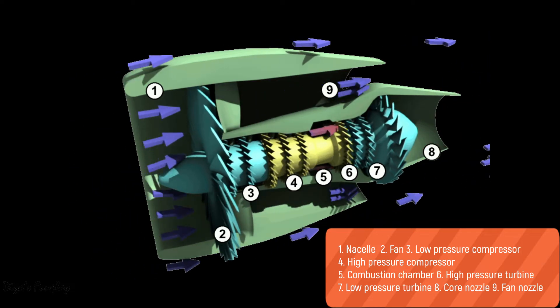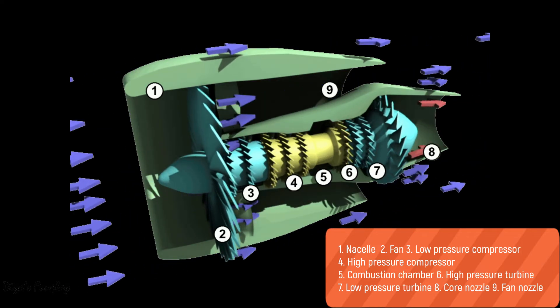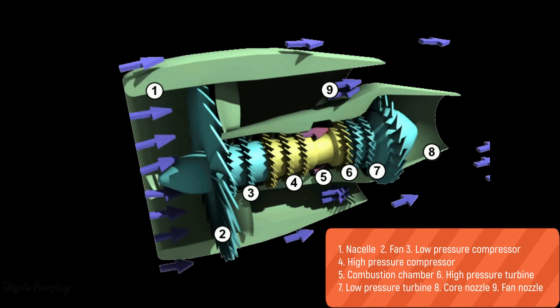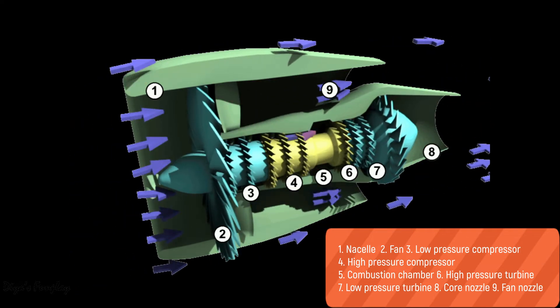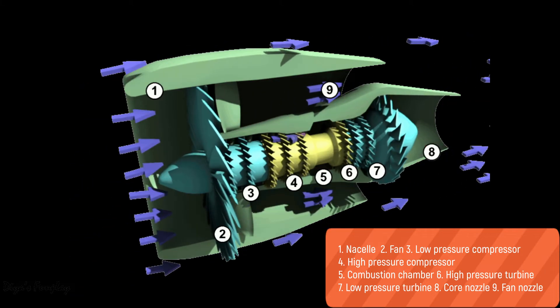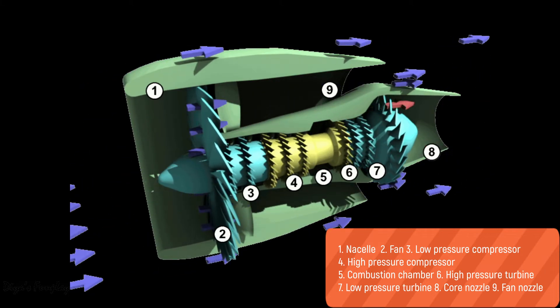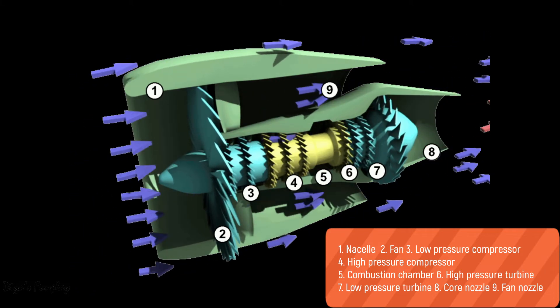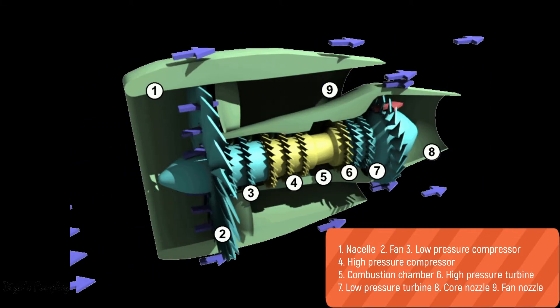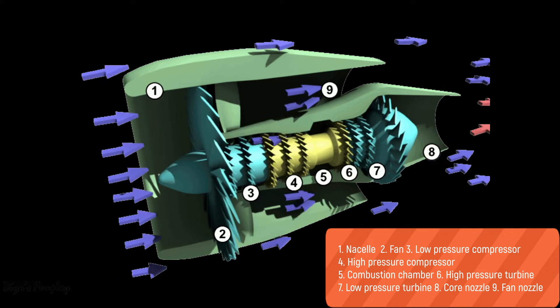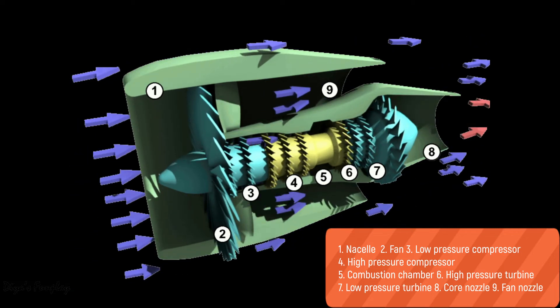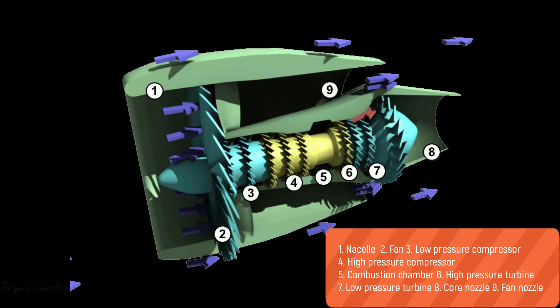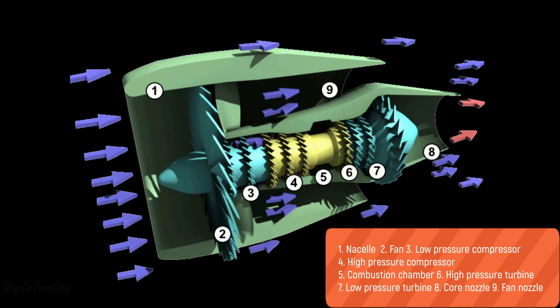In the case of a jet engine, air is sucked inside the engine by a series of rotating fans called the compressor. The air gets compressed and then sent into the combustion chamber, where fuel is injected and combustion takes place.